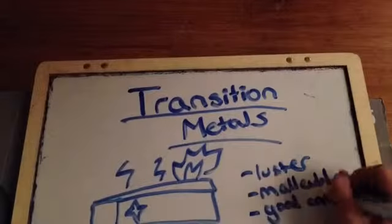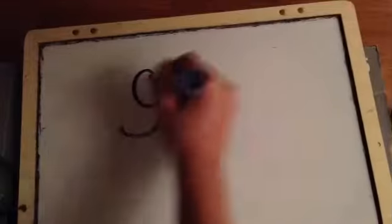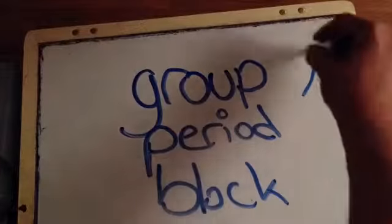Transition metals are both ductile and malleable and good conductors of electricity and heat. Cobalt is group 9, period 4, and block D.